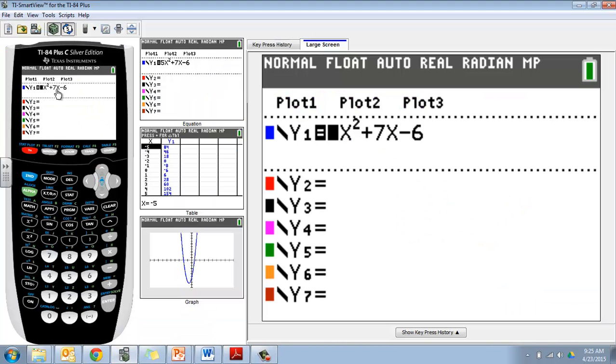So in Y equals, we'll plug in 5x squared plus 7x minus 6. Notice I didn't have the radical in there and here's the reason why. I'm trying to find my zeros. I'm really just taking what's inside the radical, setting it equal to zero, and solving.